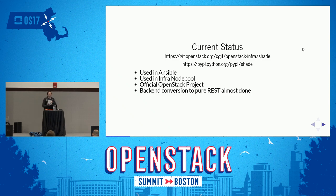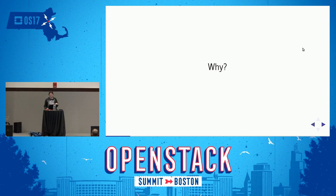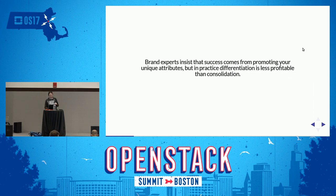In terms of current status, we've been working on converting from using the OpenStack Python libraries to using direct REST calls — that's almost done. I will talk about that more in a little bit. So why? Why did we write Shade? There are other libraries — why did we write another one?